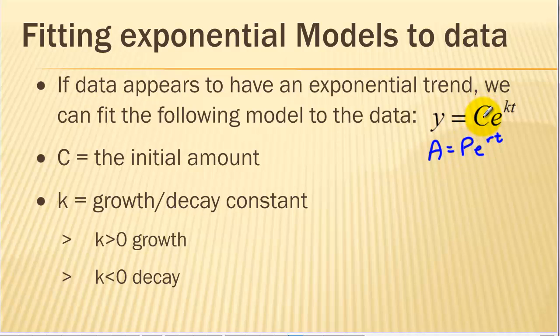C, like P, is our initial amount and k is our growth or decay constant. K is essentially the percentage growth or decay on an annual basis where the growth is continuous. When k is positive it's exponential growth and when k is negative it's exponential decay.